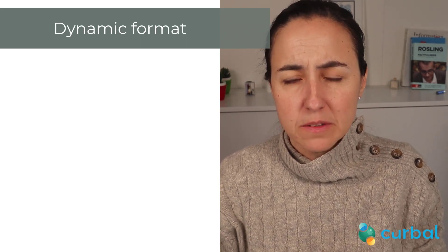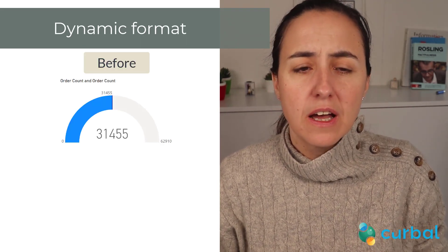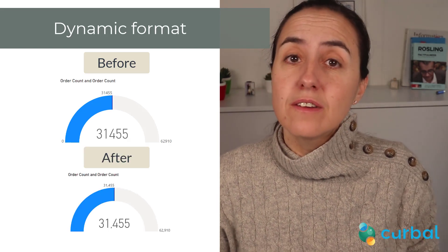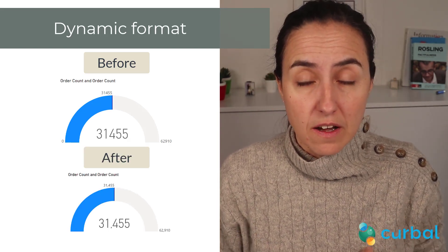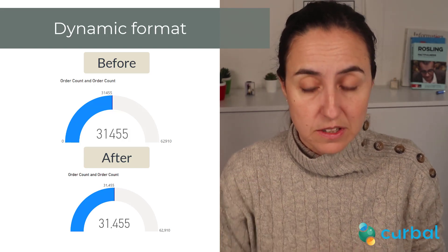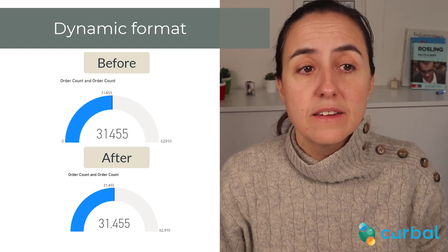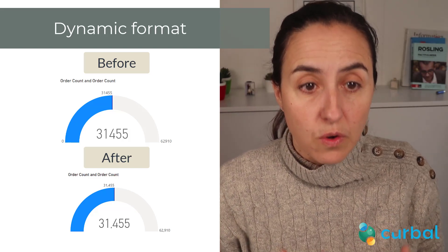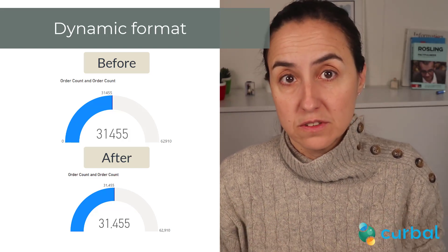The next one is a bit of a bug fix. Apparently, dynamic format strings were applied differently on different visuals, so they have fixed that. For Analysis Services data sources and calculation groups, dynamic format strings would now be supported for all categorical visuals.